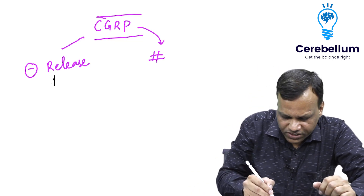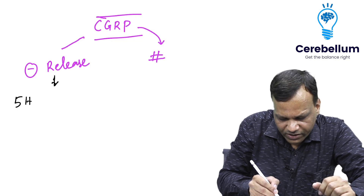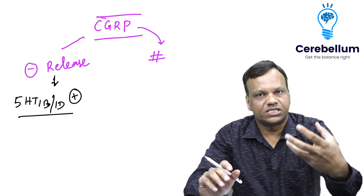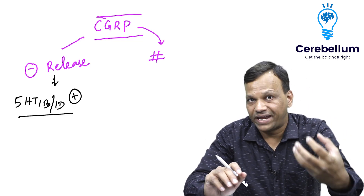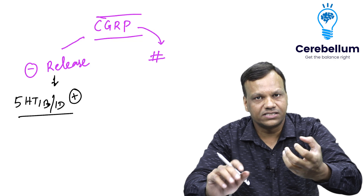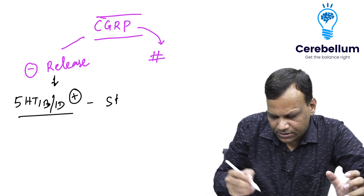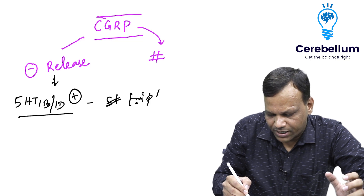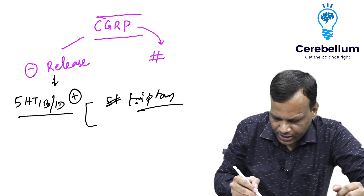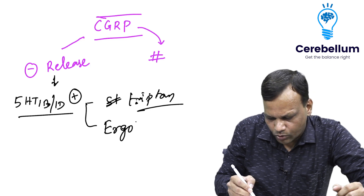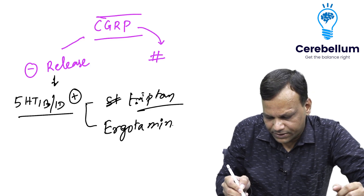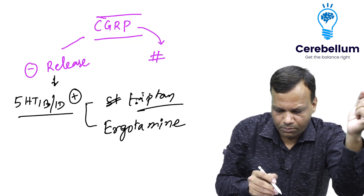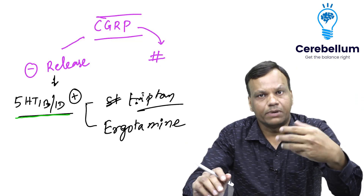The drugs which inhibit the release of CGRP are 5HT1B/1D agonists. This receptor is present on the trigeminal neuron and acts as a brake — when we stimulate it, CGRP is not released. The drugs here are triptans like sumatriptan, and another drug doing the same action is ergotamine. They inhibit CGRP release, but the problem is they cause additional vasoconstriction because this receptor is also present on blood vessels.